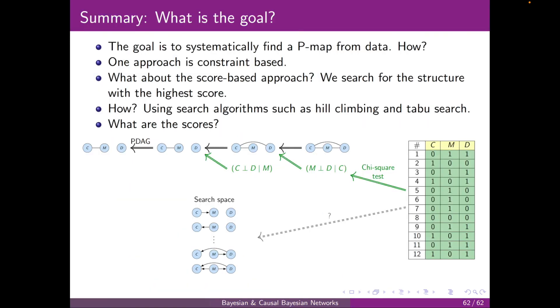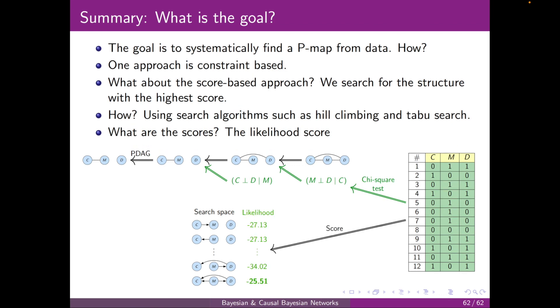Okay, to summarize, one of the scores is the likelihood score. And this will result in a completely connected network to have the high score.